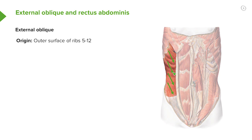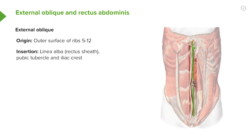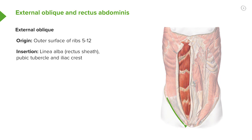The external oblique also inserts into the linea alba, this midline structure. Here's the umbilicus that we spoke about. In this diagram we've opened up this region, so we can't exactly see where the muscle inserts, but it passes towards the midline and attaches to the linea alba. It also runs down and attaches to the inguinal ligament, the iliac crest, and the pubic tubercle.